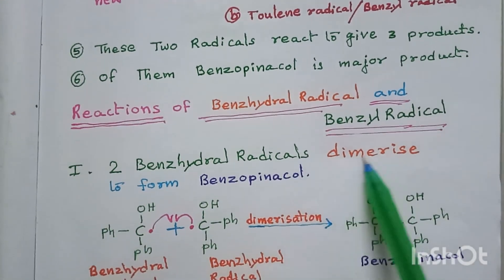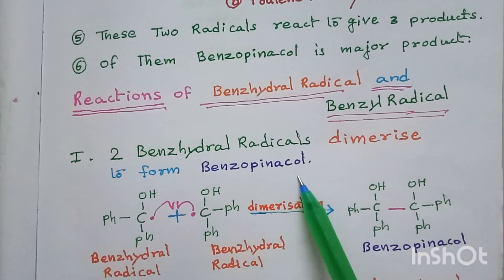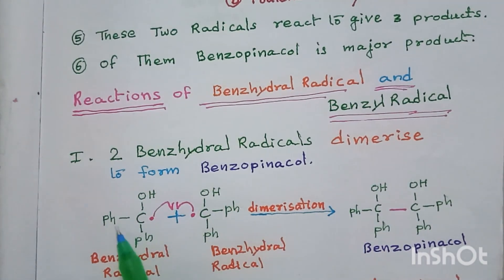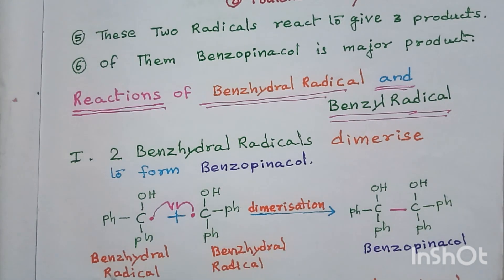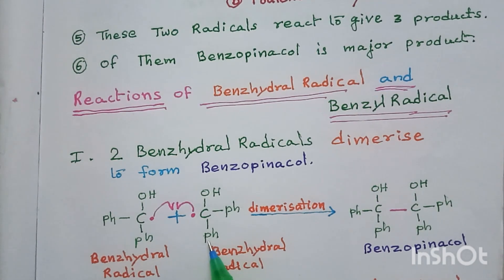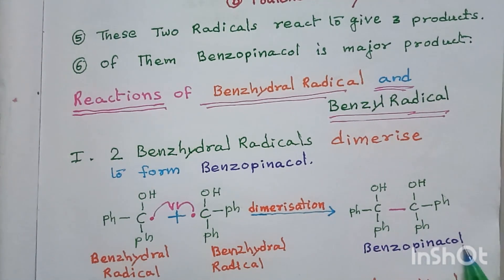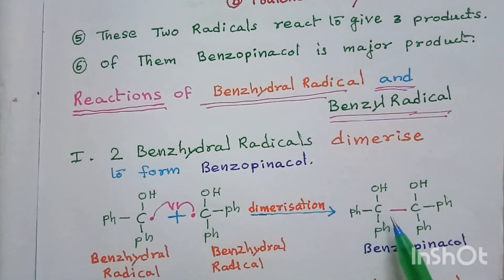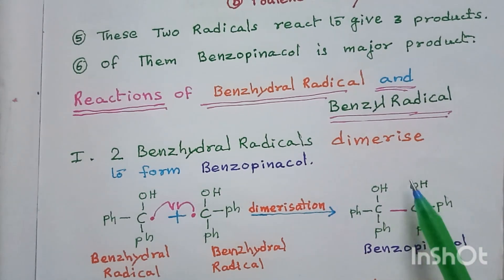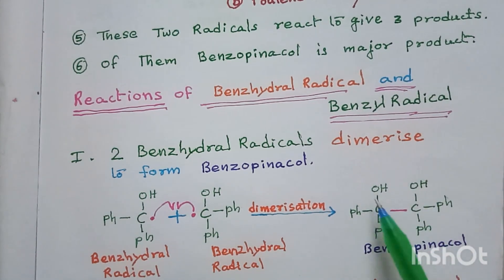Two benzhydrol radicals (Ph₂C•–OH) dimerize or combine to form benzopinacol: Ph₂C(OH)–C(OH)Ph₂. Benzopinacol has two hydroxyl groups, which is why it is called a pinacol. This is the major product.